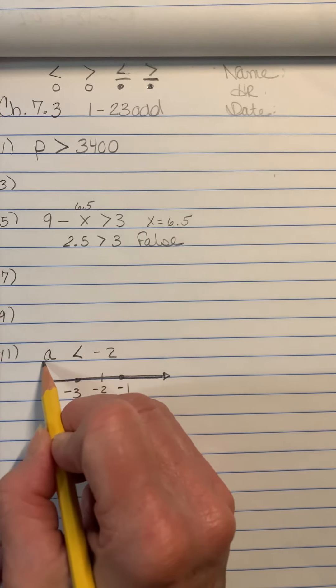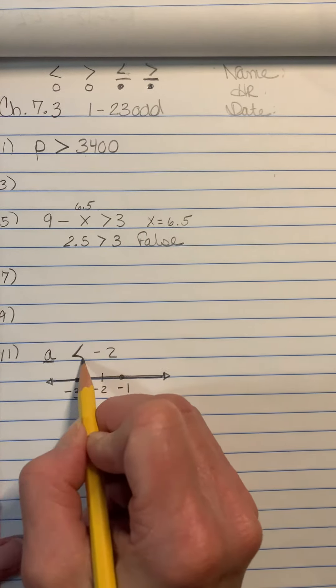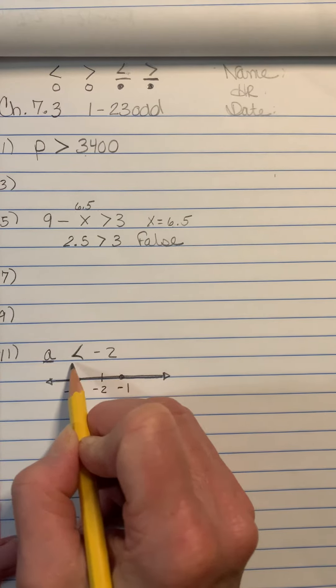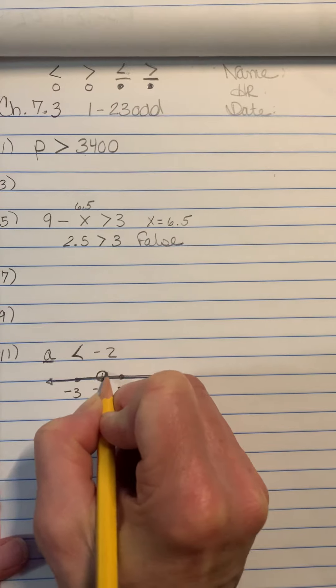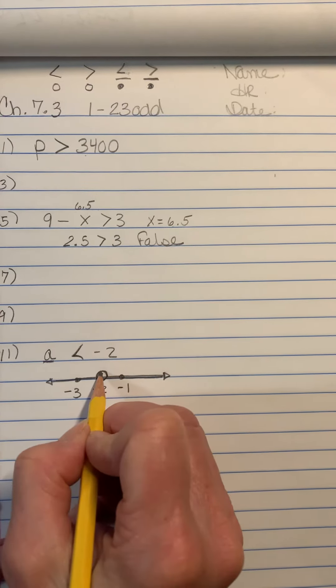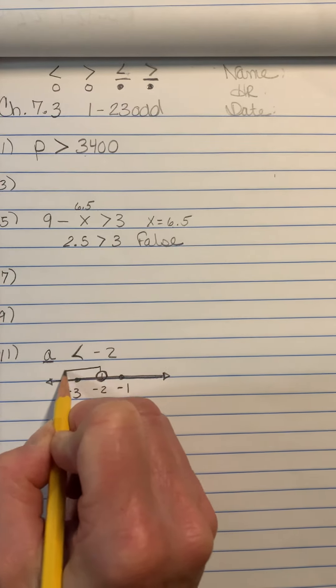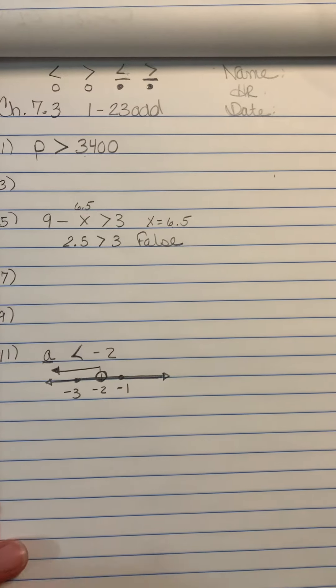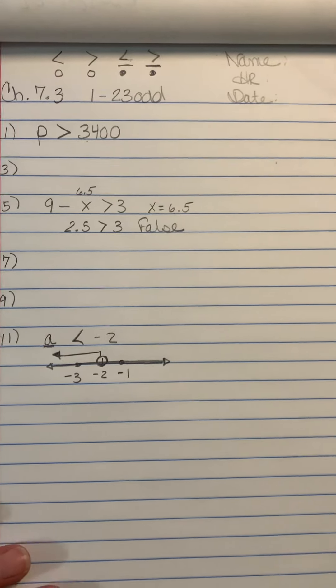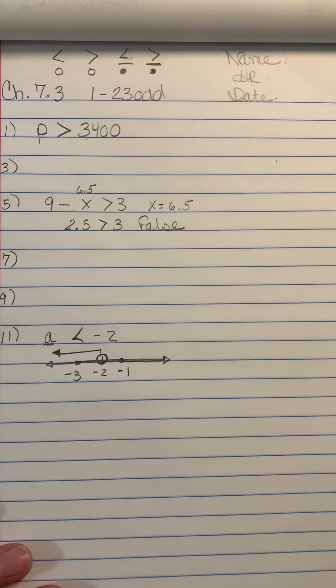It's less than. As long as the variable is first, it's telling you what direction to go. And it's not included. So you're going to do an open circle at negative 2. And this is how I do it. You go up and out. So it includes everything less than negative 2. Remember, less is left. Less is left.